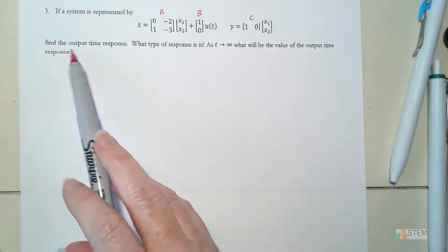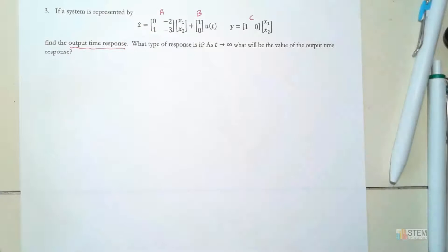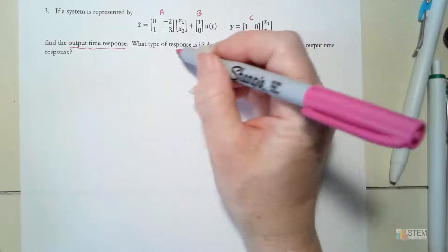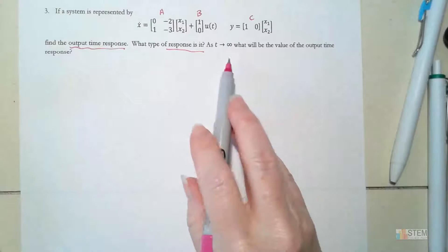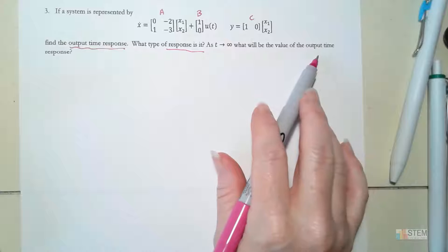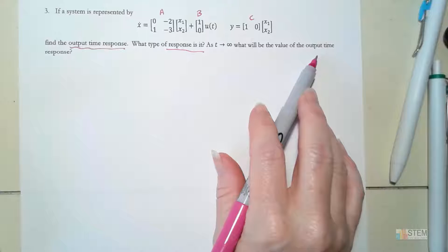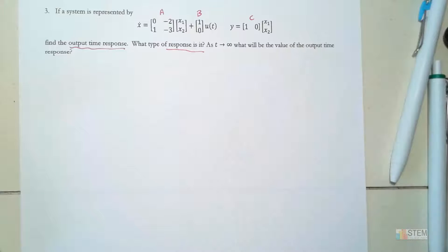So it wants us to find the output time response. That's what we're looking for, and it wants to know what type of response it is. And then as T goes to infinity, what's going to be the value of the output time response? So we're going to find basically three different things here.